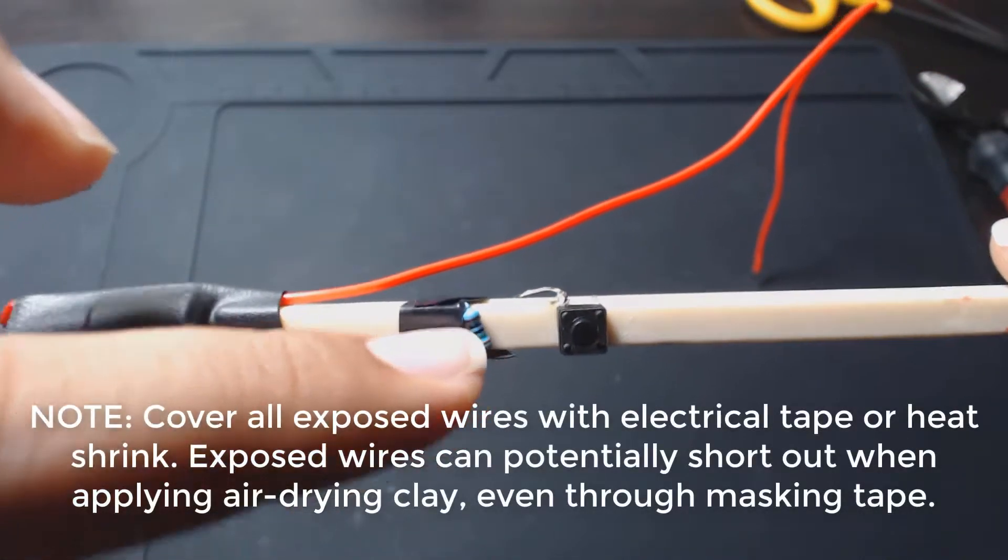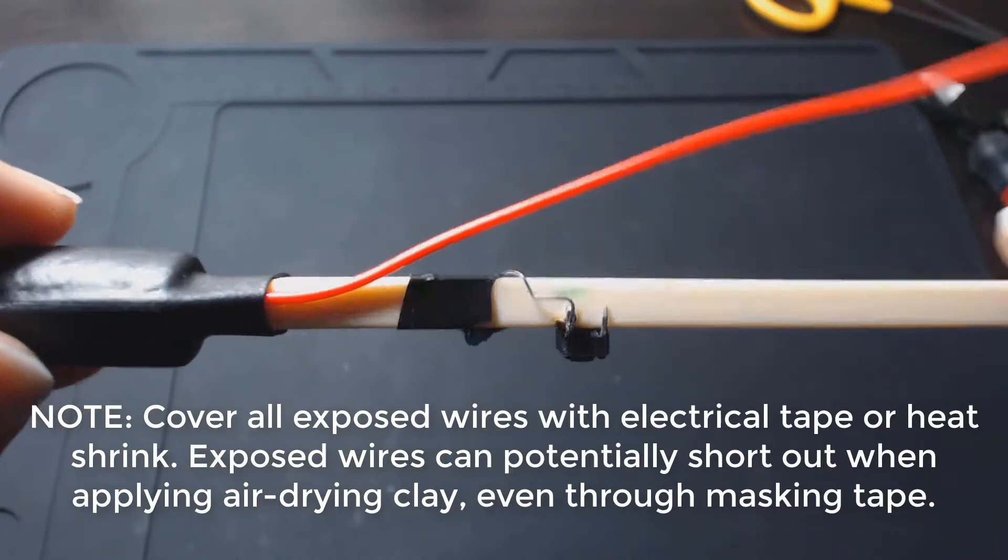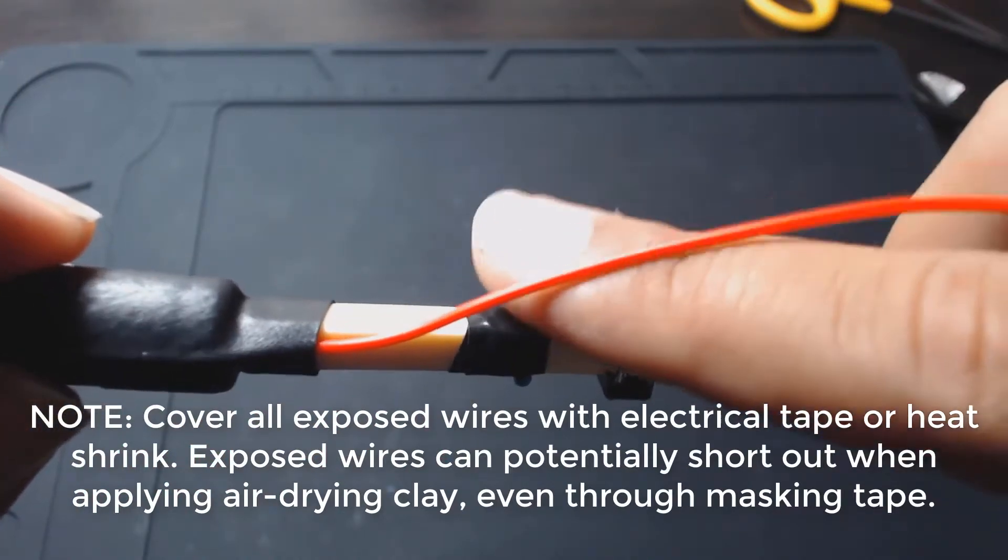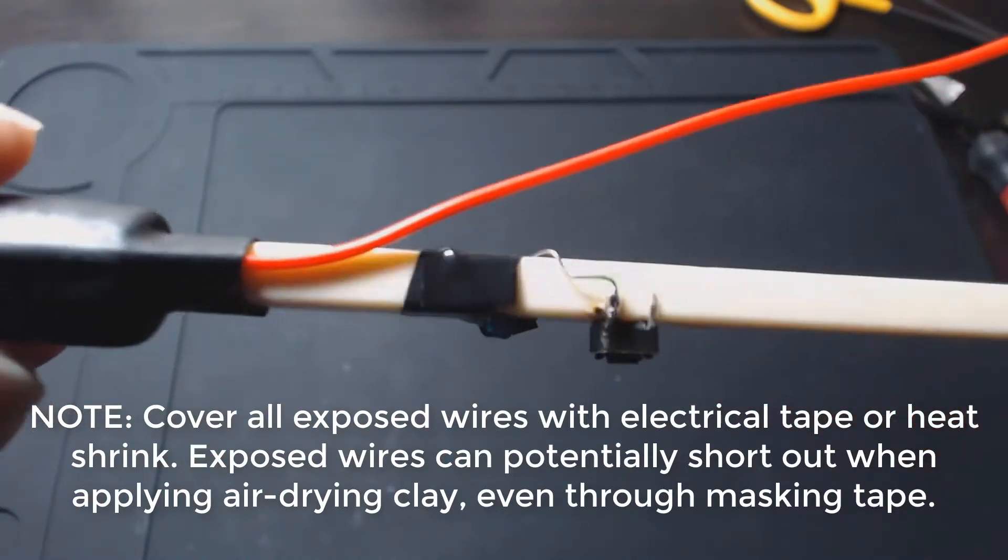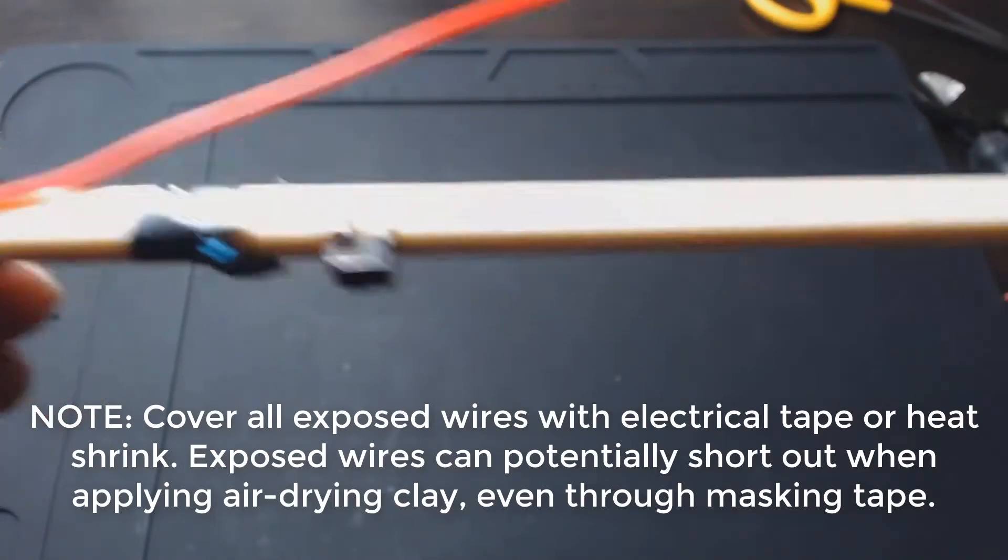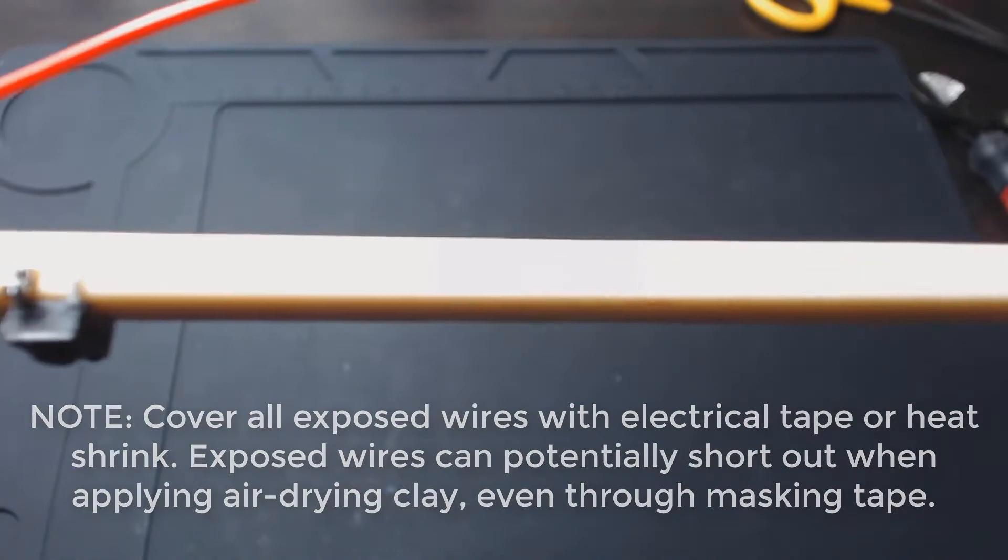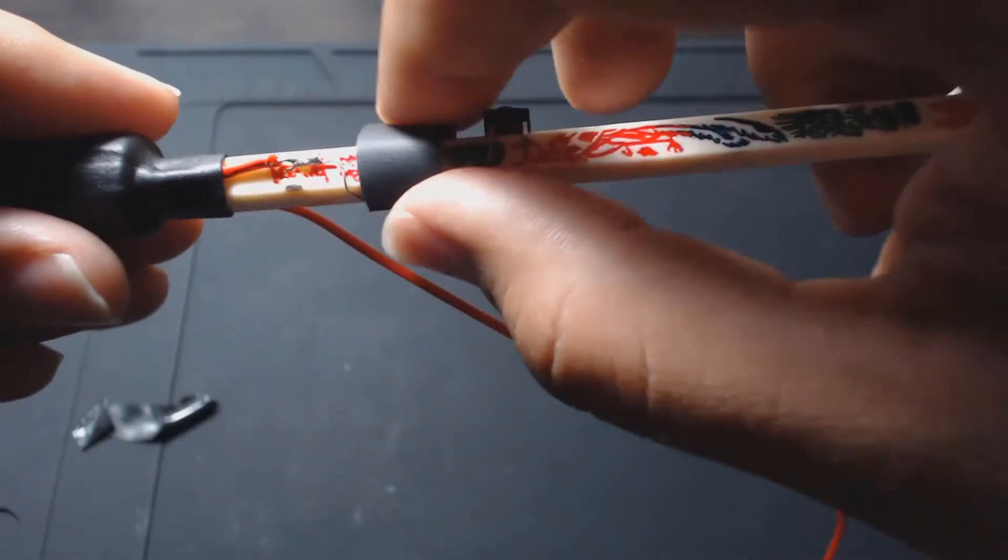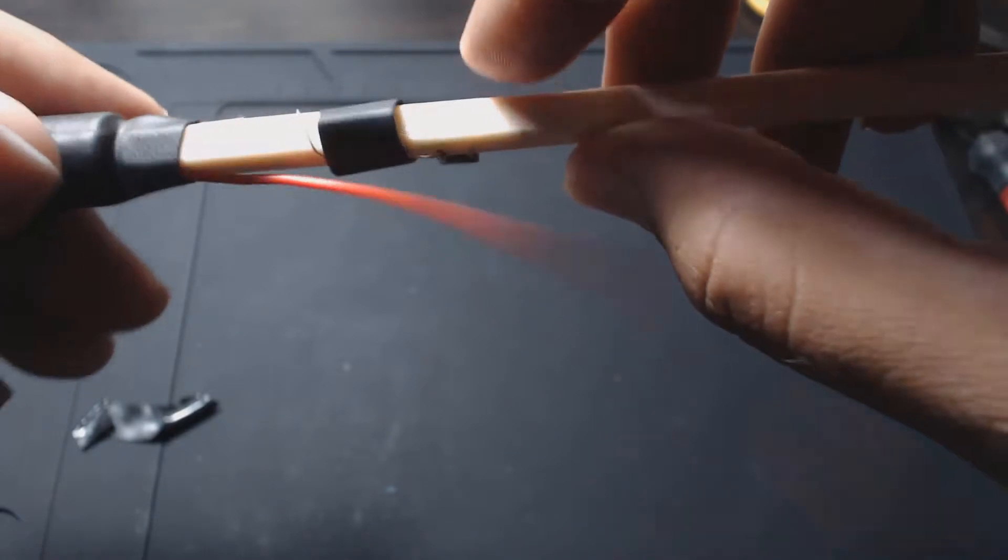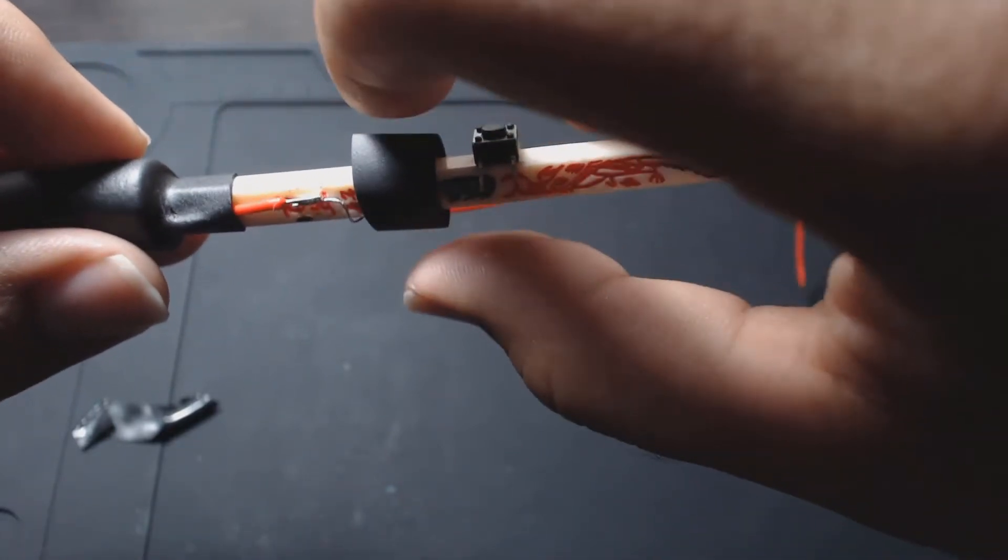For that, what I'm using is I believe three-eighths of an inch, and then slide it right over there. Then I'm going to heat shrink that. I guess I could probably want a little longer to cover some of the soldering points, but I'll just cover it with electrical tape after.